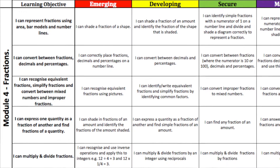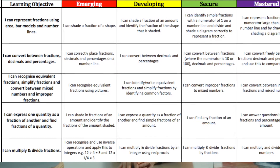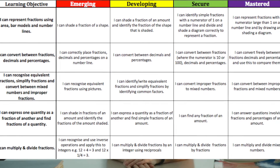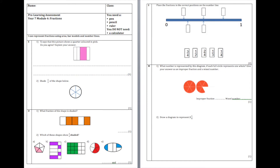Each half-term, we deliver a module focused on a different topic of Mathematics. For example, in year 7, spring 2, we teach fractions. We target specific ICAN mastery statements in each module, which are building blocks for being successful in that module. For example, in year 7, spring 2, a mastery statement could include: I can multiply and divide fractions. We assess the progress students make against these mastery statements using a pre- and post-test, before and after each module.